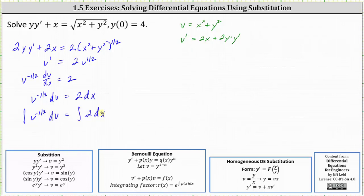On the left, integrating with respect to v, we have v to the one-half divided by one-half, or two v to the one-half. We'll include the constant on the right, equals two x plus a constant. Let's let the constant be c sub one.